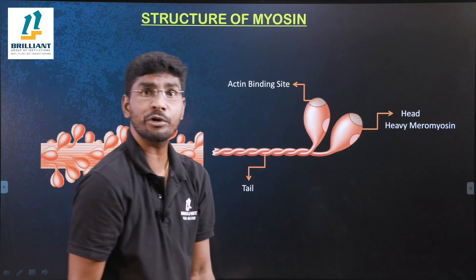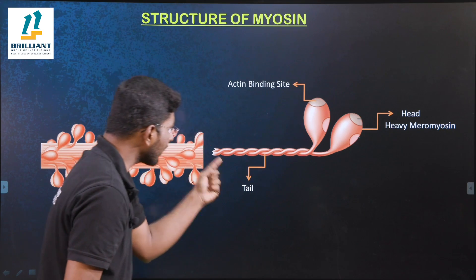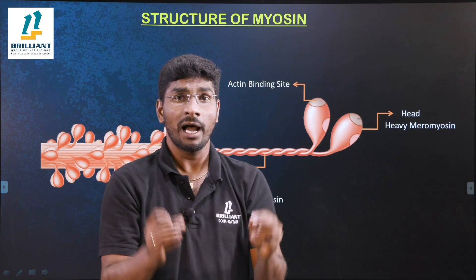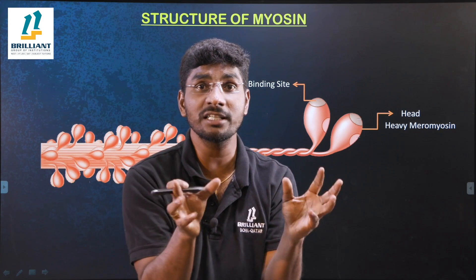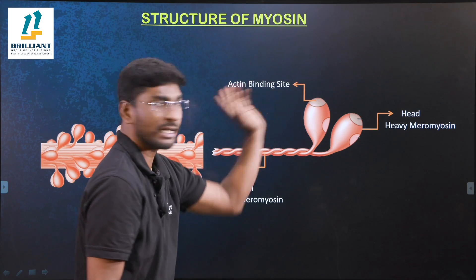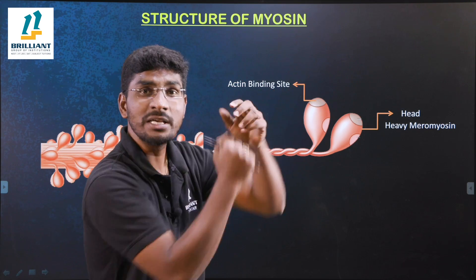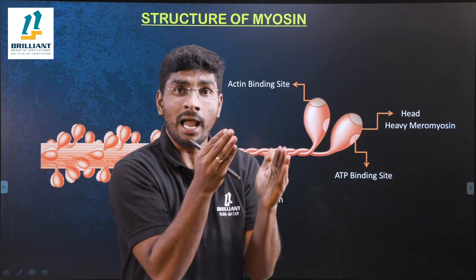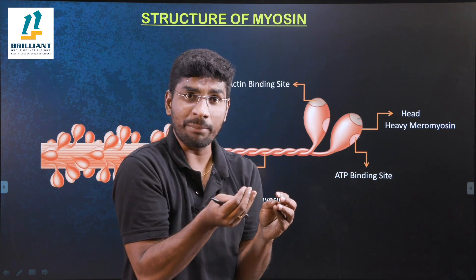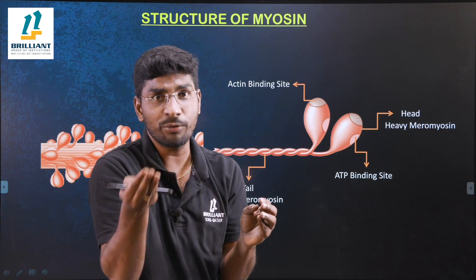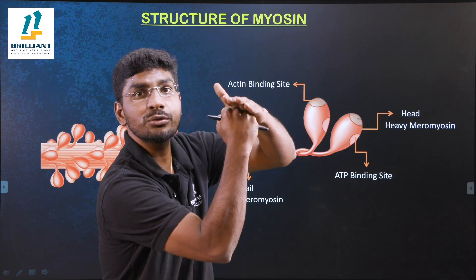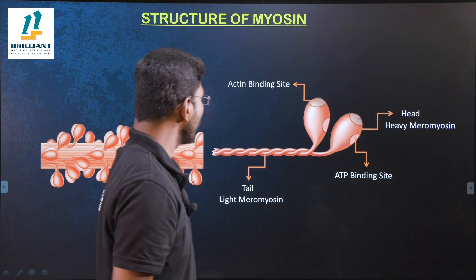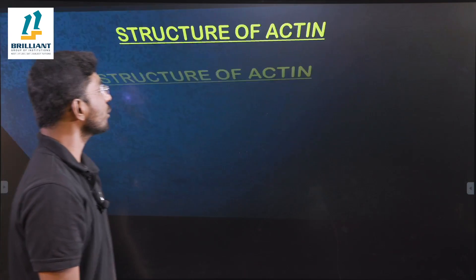The tail of meromyosin is made up of light meromyosin. There are two types of binding sites in the myosin protein: first, the actin binding site, which binds to actin; and second, the ATP binding site. The myosin protein takes one ATP, hydrolyzes it into ADP and inorganic phosphate, the head part lifts up and attaches to the actin thin filament during muscle contraction.